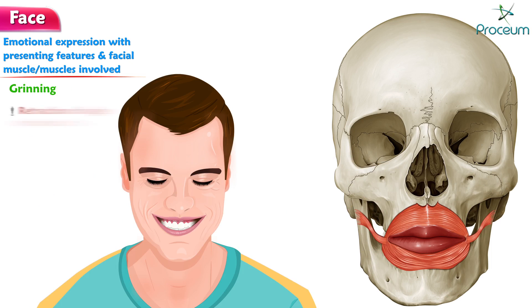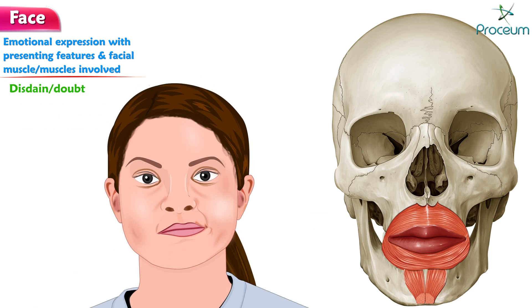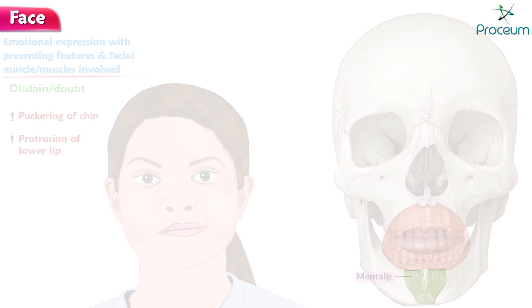Grinning: retraction of the angle of the mouth laterally — risorius. Disdain or doubt: puckering of the chin and protrusion of the lower lip — mentalis.